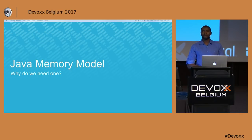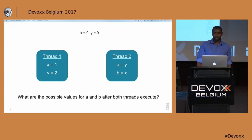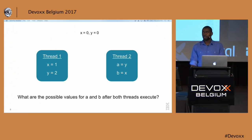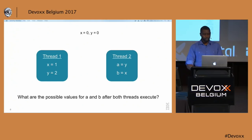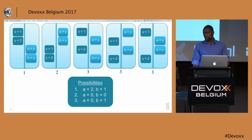Java is the first mainstream language that came out with a memory model, back in around 1995. This was done to clearly define the behavior of programs in a multi-threaded system. Here's an example: we have two variables x and y, both initialized to zero, and two threads — thread 1 and thread 2. Thread 1 writes 1 to x and then writes 2 to y. Thread 2 reads y into a and then reads x into b. In the first scenario, thread 1 executes first, writes 1 to x then 2 to y, and thread 2 reads — the result is a=2 and b=1.